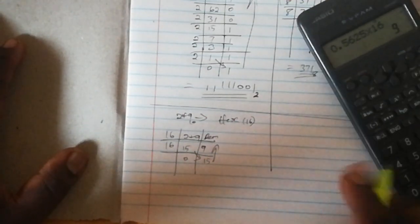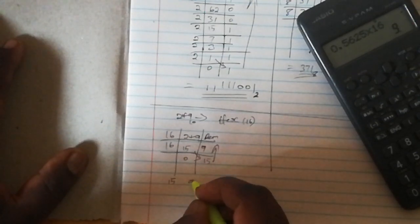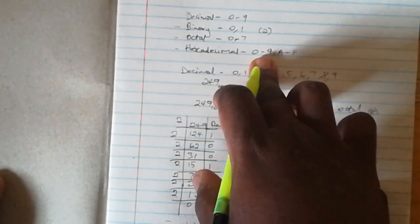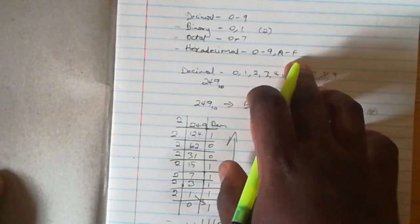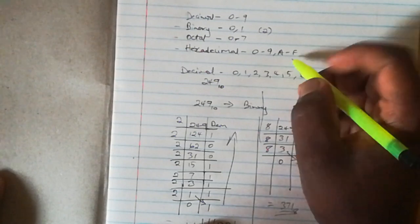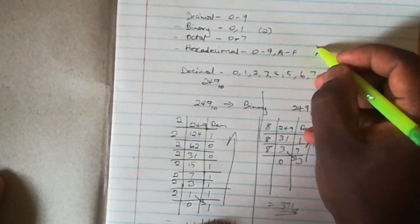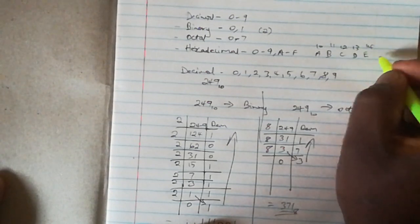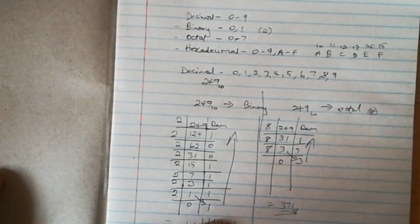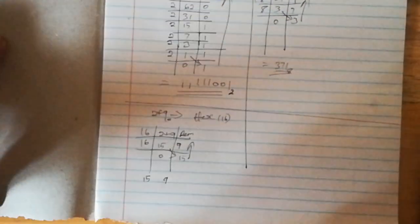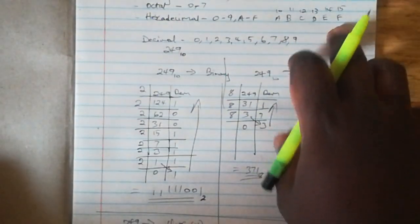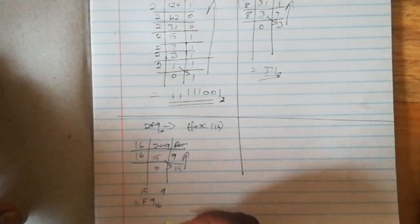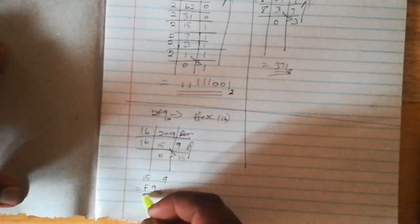Reading it in reverse, I have 15 and 9. Now I want us to be keen. In the hexadecimal number system, we have digits 0 to 9, then followed by letters A to F. A stands for 10, B is for 11, C is for 12, D is for 13, E is for 14, and F is for 15. After our division, we substitute 15 with its corresponding letter F. Therefore we have F9 base 16 as our final number.